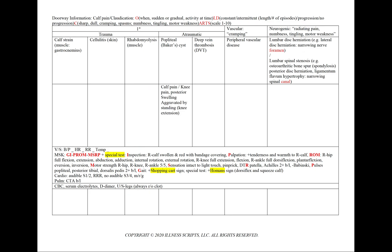For rhabdomyolysis, we add creatinine kinase and urinalysis for urine myoglobin to our workup. In a popliteal or Baker's cyst, we'll see calf or posterior knee pain with swelling, aggravated by standing or any activity involving knee extension. In deep vein thrombosis, we'll see calf pain with erythema, warmth, and swelling on inspection and palpation. We can note pleuritic chest pain, hemoptysis, and dyspnea, with a history of immobilization, oral contraceptives, or obesity, and a positive Homans sign on exam.